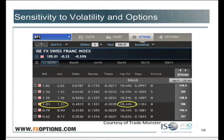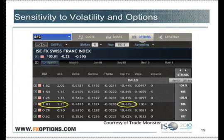Their implied volatility is 10.44. That's stated as a percent — the annualized standard deviation in percentage of the price of the Swiss franc. Really what you use that for is a benchmark; it's basically the relative price of the options. When implied volatility rises, the price of the options increases. When implied volatility falls, the price of the options decreases.